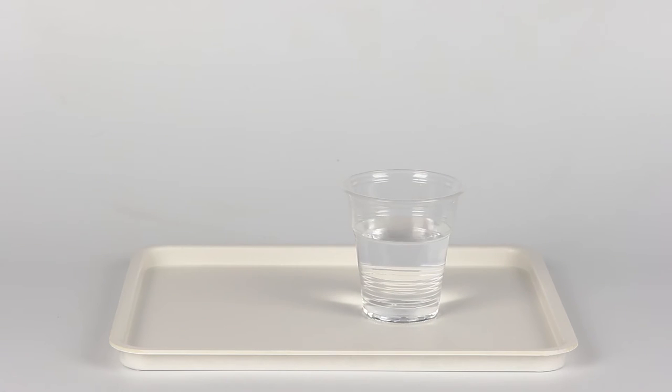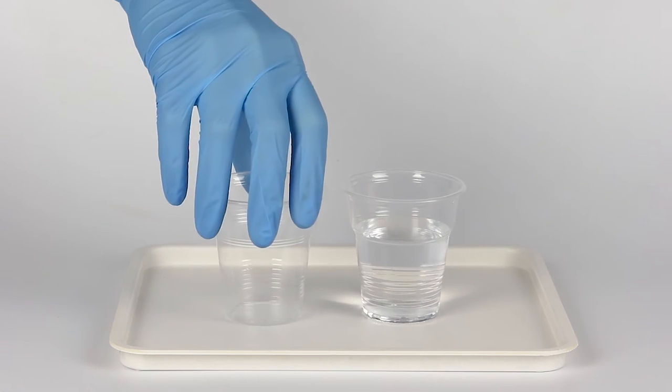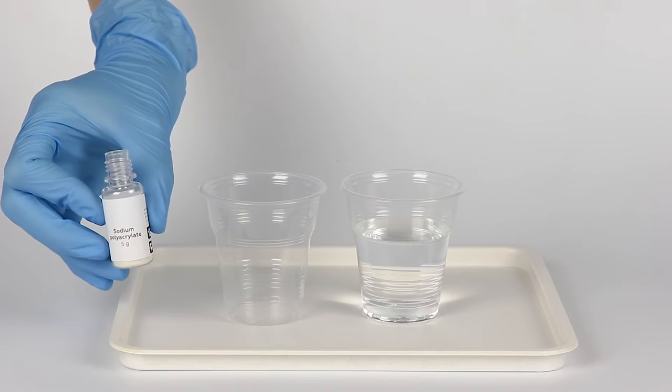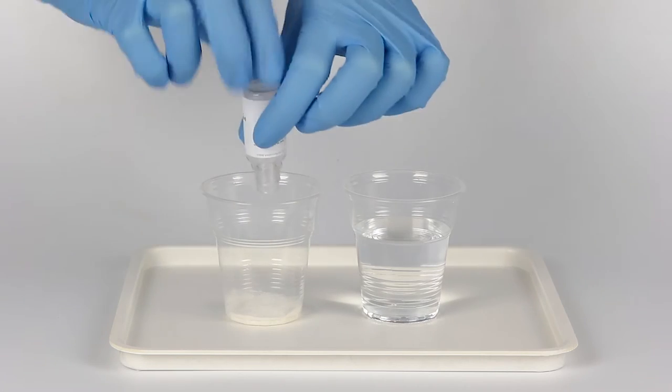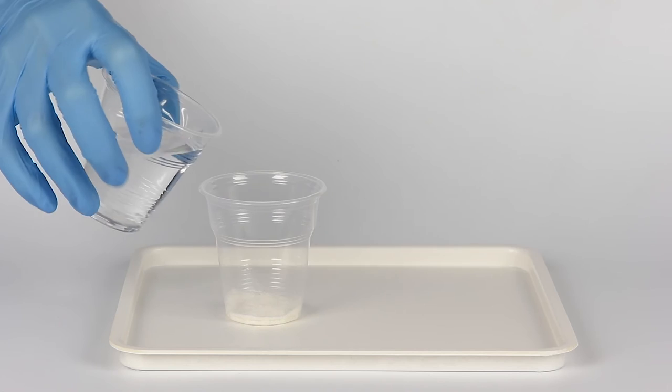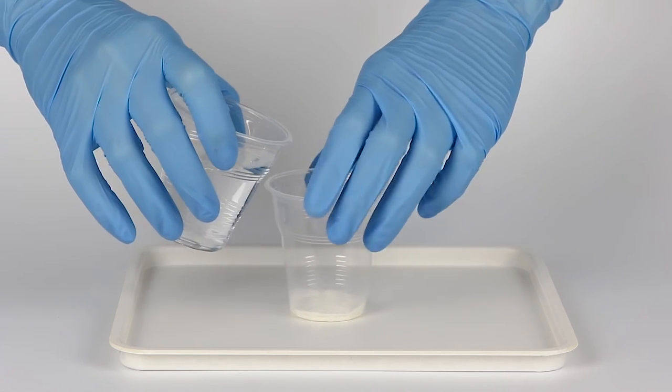Fill one disposable cup with water approximately two-thirds of the way full. Pour one bottle of sodium polyacrylate into the other cup. Then pour all of the water into the cup of sodium polyacrylate.